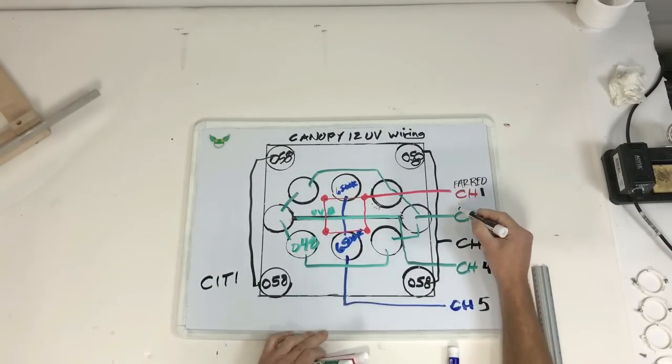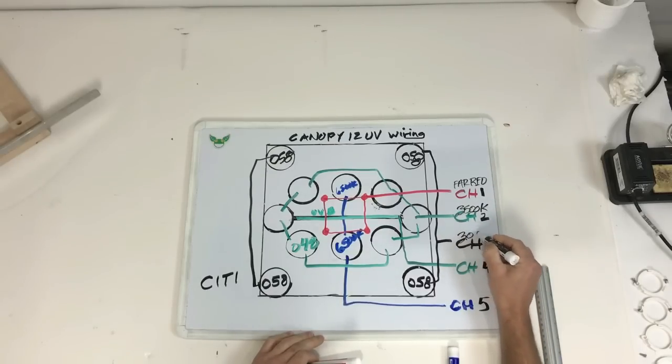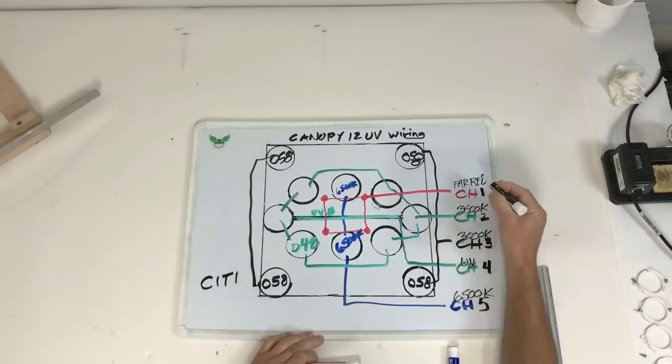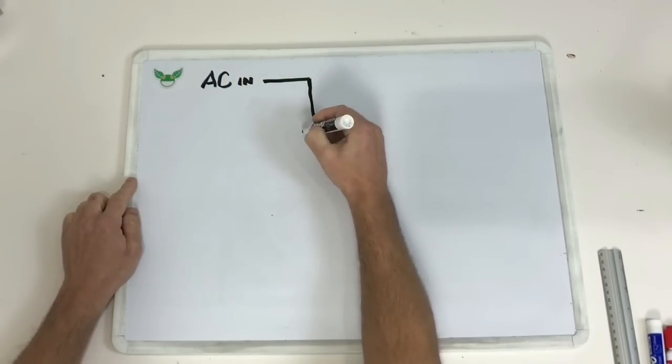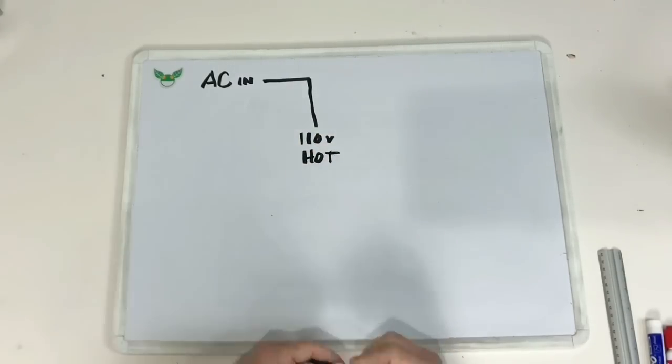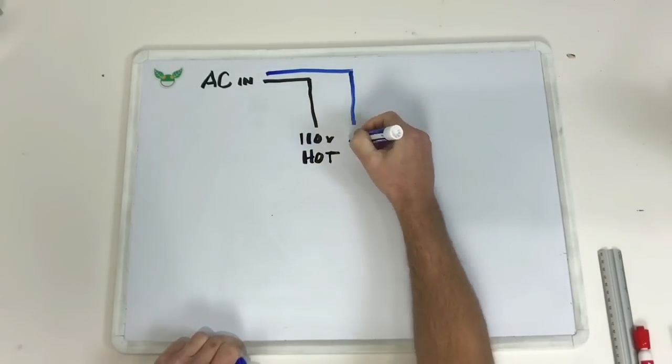That would be five timers taking up five plugs, five different things that could fail, five things that you would have to set. So the goal in this project is to make it to where you could just plug it in and it'll work with the controller. To tackle a project like this, I like to start with the AC in.